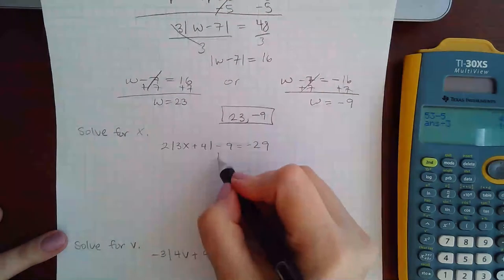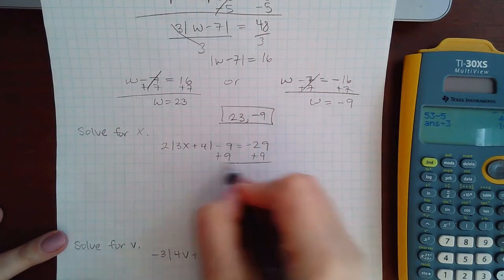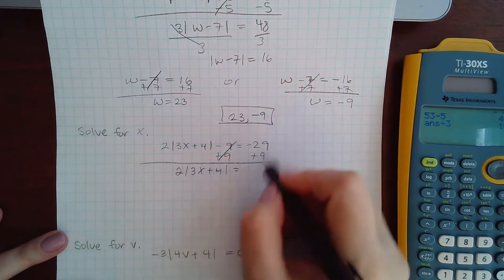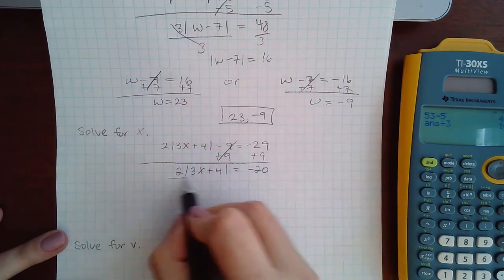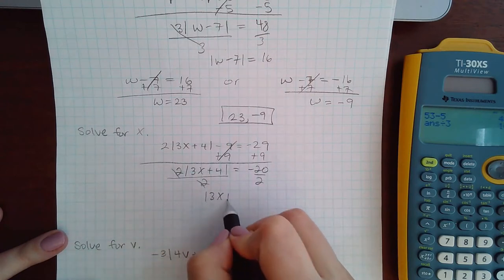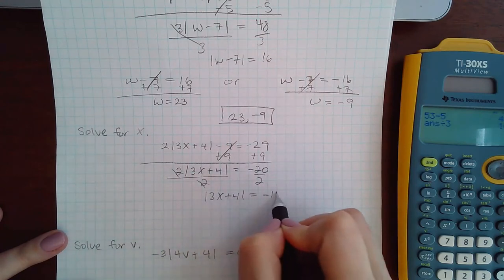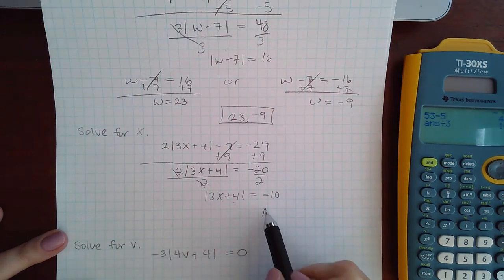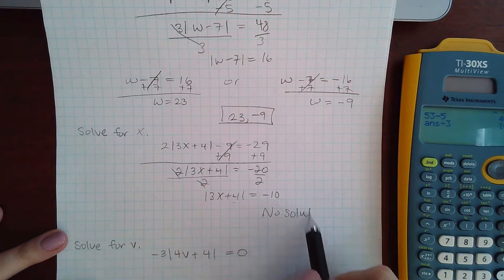we would have to add 9 to both sides which gives me negative 20. Divide by 2 on both sides, I get negative 10. And because the absolute value can never equal negative 10, the answer here is no solution.